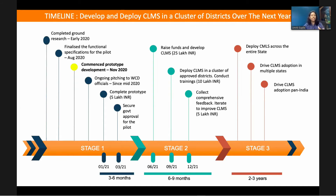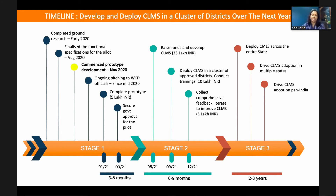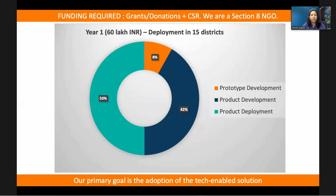Right now we are at the yellow dot on our roadmap. We have completed early ground research through 2019 and 2020, figured out the functional specifications for the technology solution, and started prototype development. In stage one, we aim to complete the prototype and secure government approval. In stage two, we plan to deploy the solution in about 15 to 20 districts and collect comprehensive ground feedback. In stage three, we plan to expand to multiple states and then pan-India. The funding we require over the first year is about 60 lakh INR, half for product development and half for product deployment.